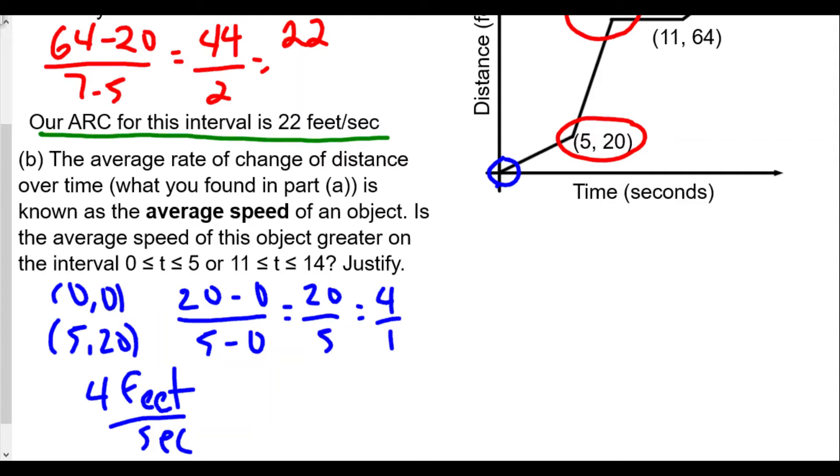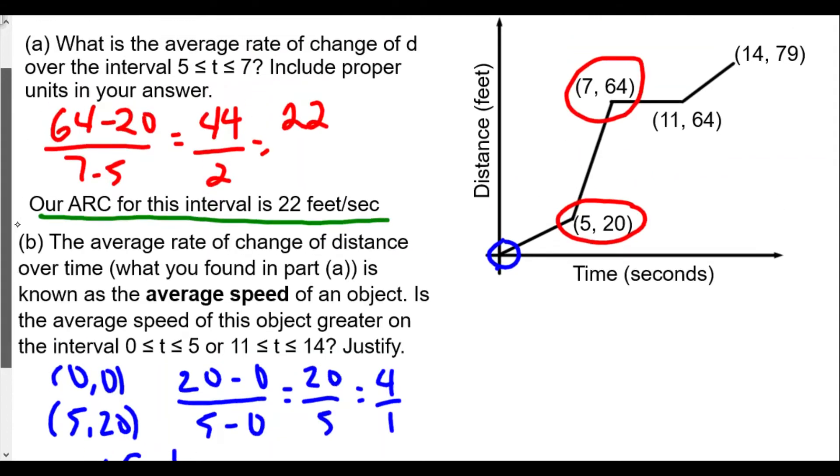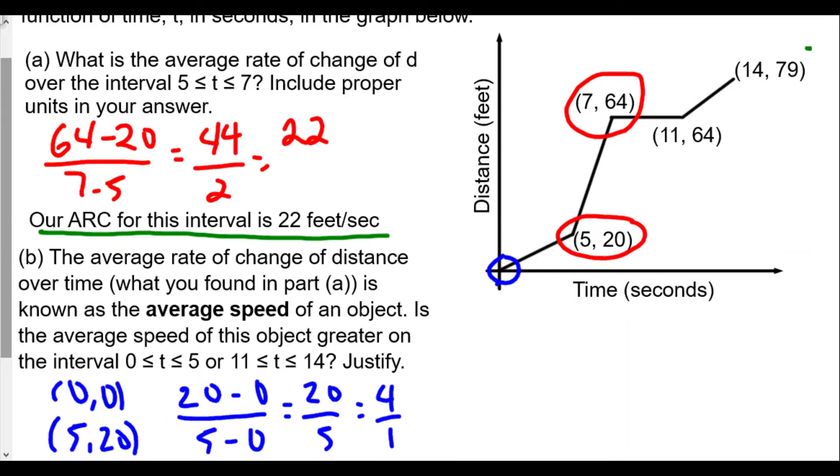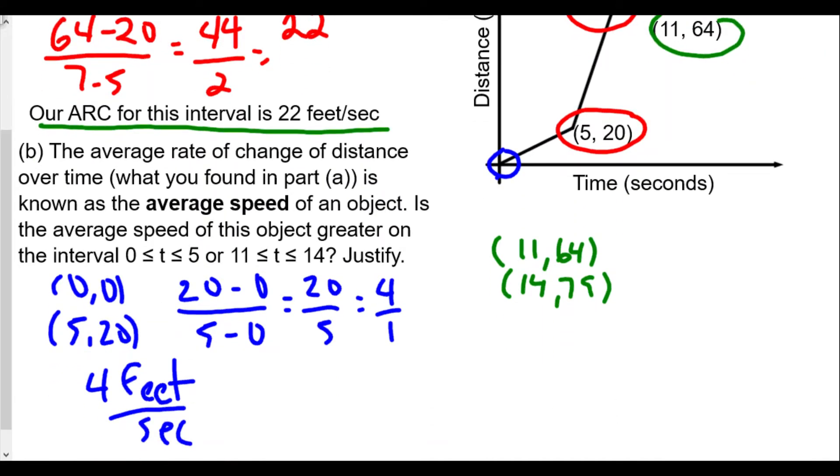Now we're going to take a look at the interval between 11 seconds and 14 seconds. We have the coordinates of 11 comma 64 and 14 comma 79. We'll find the average speed. So we're going to do 79 minus 64 over 14 minus 11. We would get 79 minus 64 is 15, and 14 minus 11 is 3. So 15 divided by 3 is 5. The average speed between time 11 and 14 would be 5 feet per second.